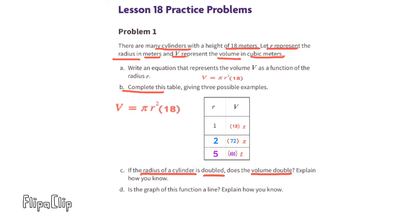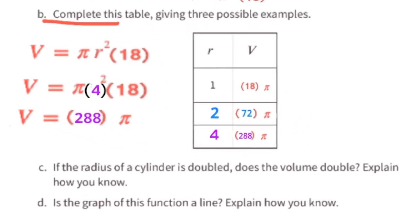Let's go back to the table and change the radius 5 to a radius of 4, because a radius of 4 is double a radius of 2. V equals pi times 4 squared times 18, which equals 288 pi. So when the radius is 4, the volume is 288 pi. Looking at the volume when the radius is 2: doubling 72 would give a volume of 144. But when you double the radius from 2 to 4, the volume is 288 pi — not 144 pi.